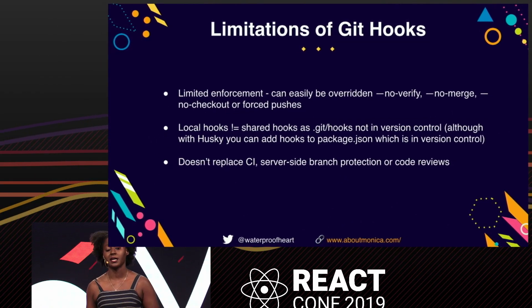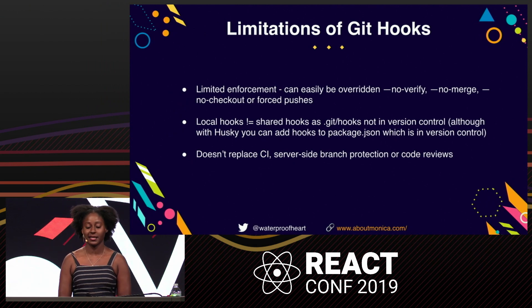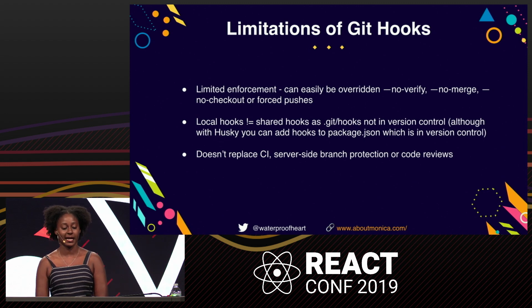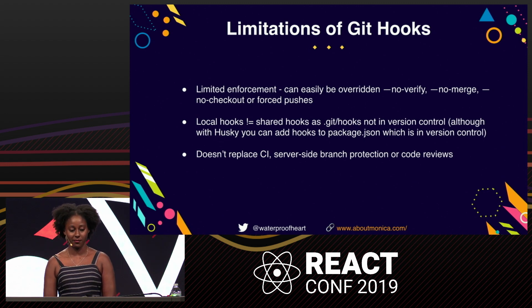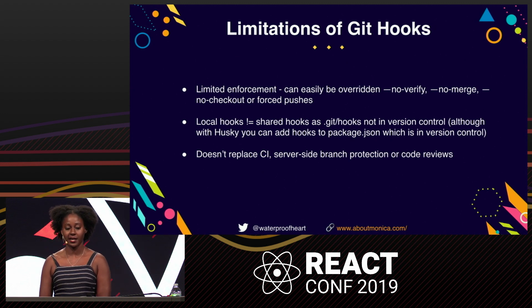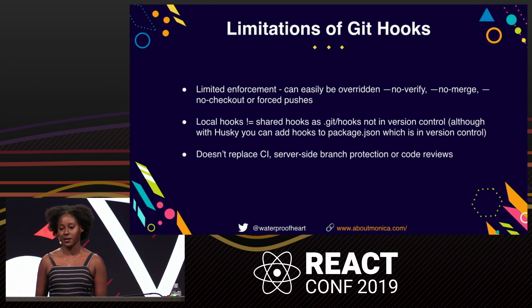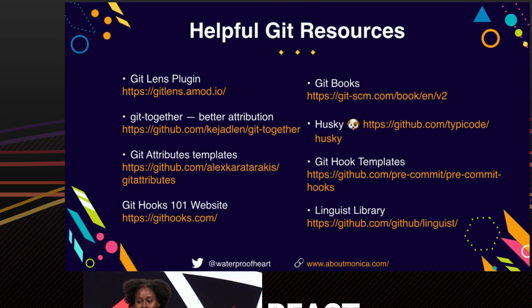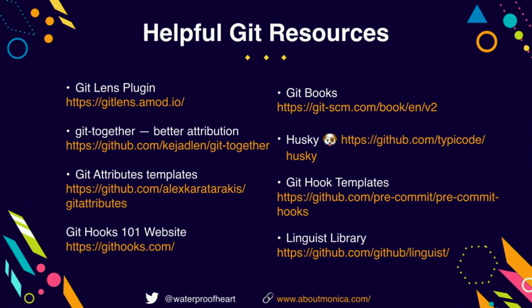There are some limitations of Git hooks. They can easily be overridden — you can force push — so it's definitely not a very strict enforcement mechanism. It's more of a nice-to-have. Generally, hooks are not shared, but if you do have them in your package.json they'll be committed to version control. These are some resources — I'll share my slides on Twitter. Thank you.